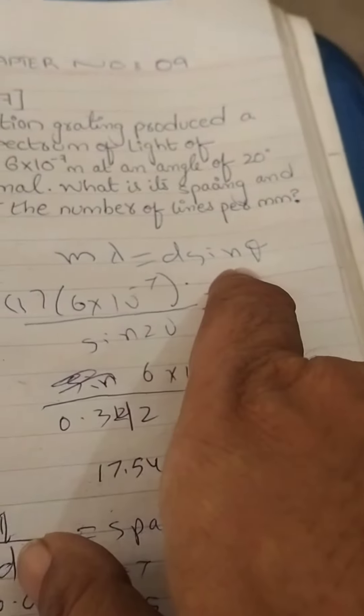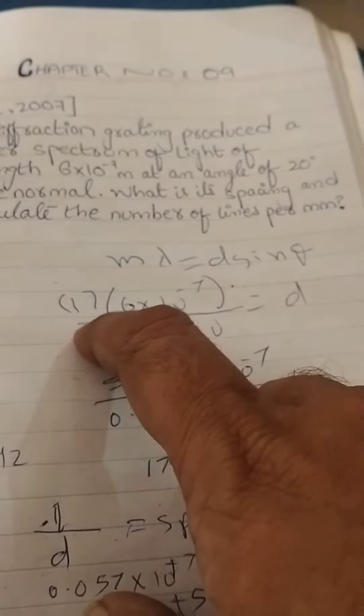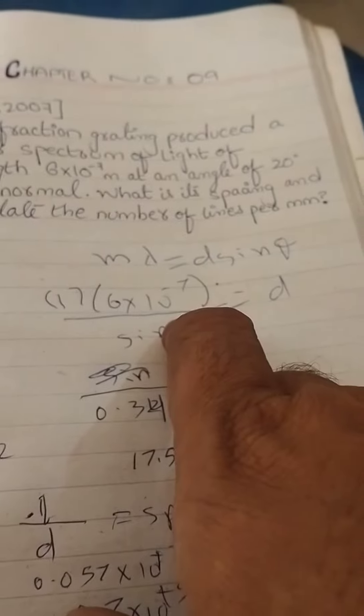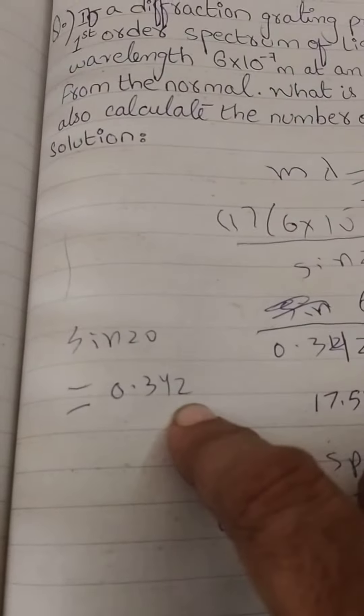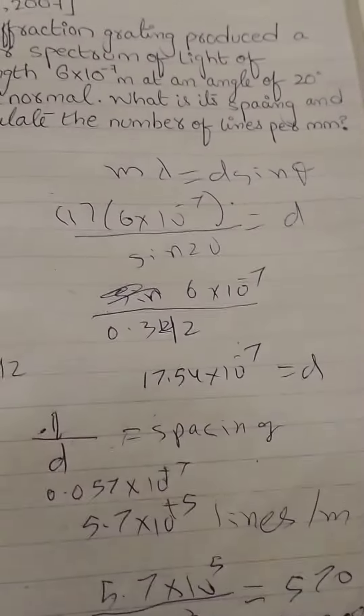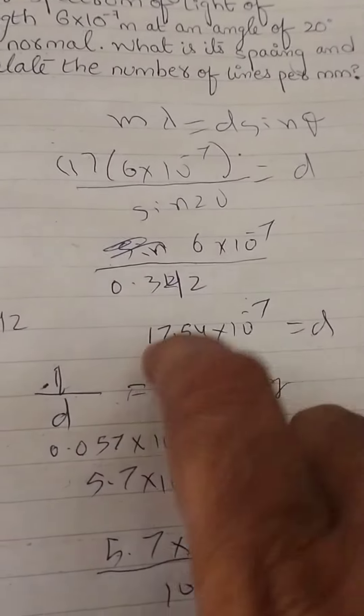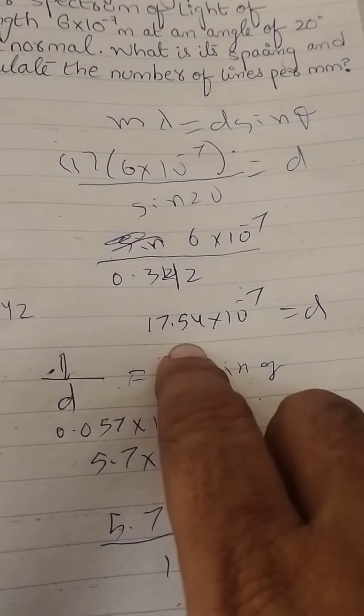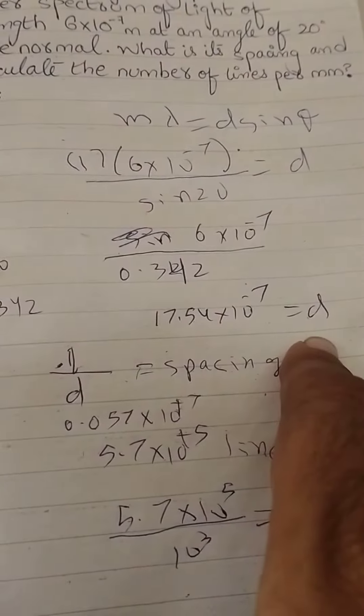Formula: m λ = d sin θ. m ki jaga 1, lambda ki jaya 6 × 10^-7. Ab sin 20 ki value 0.342. So divide karein 0.342 se. 6 ko 0.342 se divide karein to ho jayega 17.54 × 10^-7.